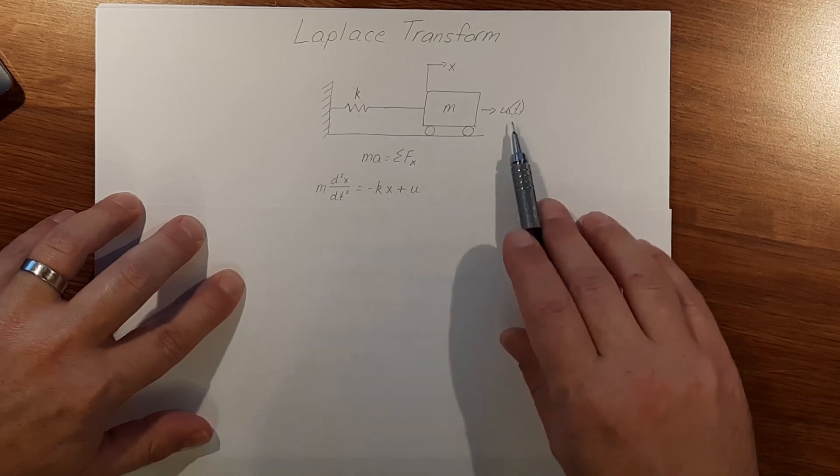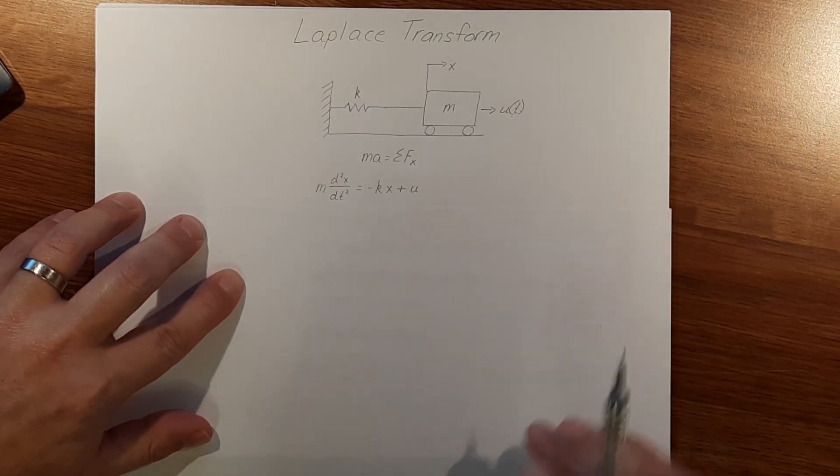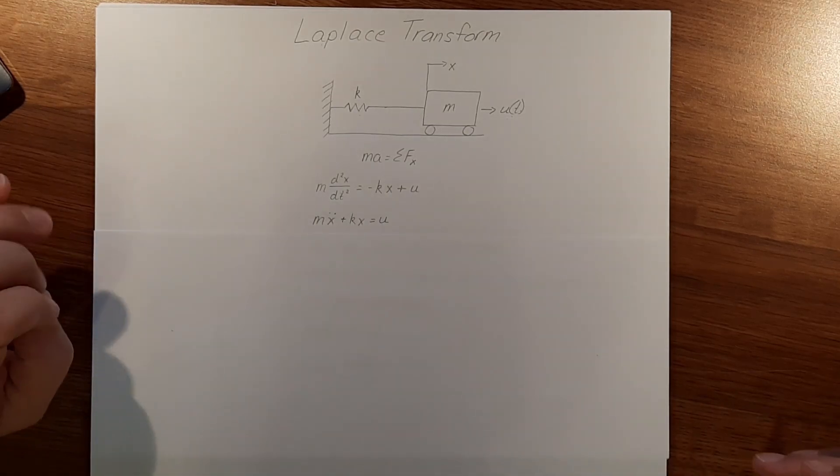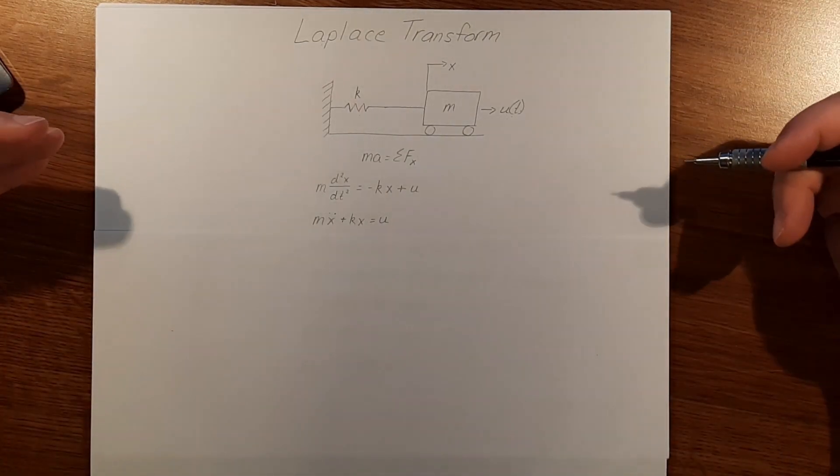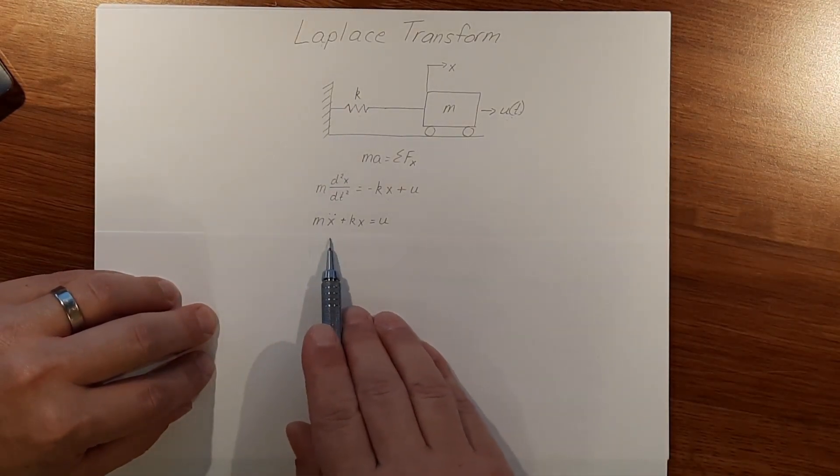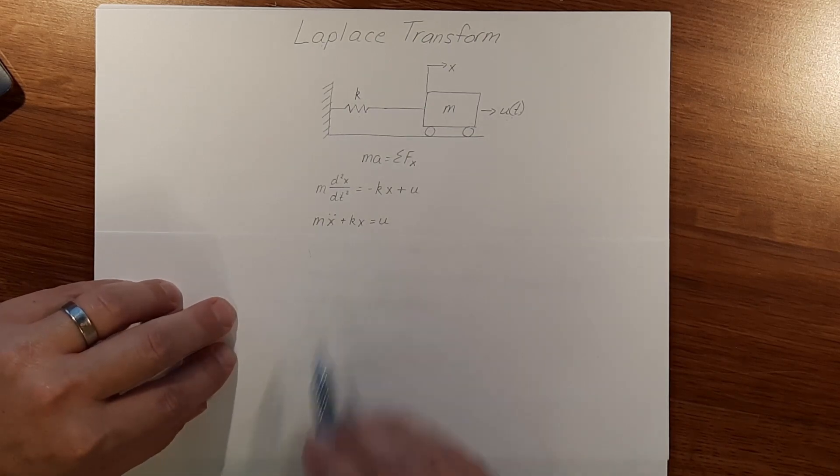Then we add our input of u. Rewriting this in terms that are more used in dynamic systems, we get m x double dot plus kx equals u.